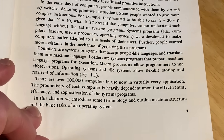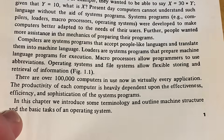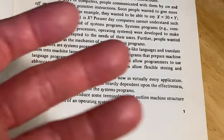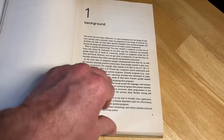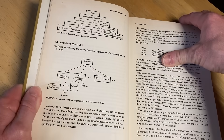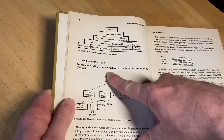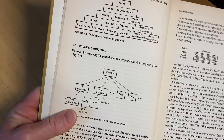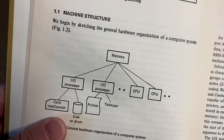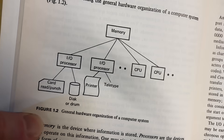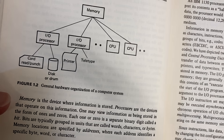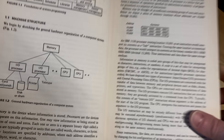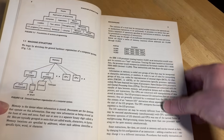There are over 100,000 computers in use now — and if only the authors had the foresight, because I'm recording this with a cell phone, which has a computer and an operating system. So pretty amazing. Machine structure — general hardware organization of a computer system. Pretty cool.